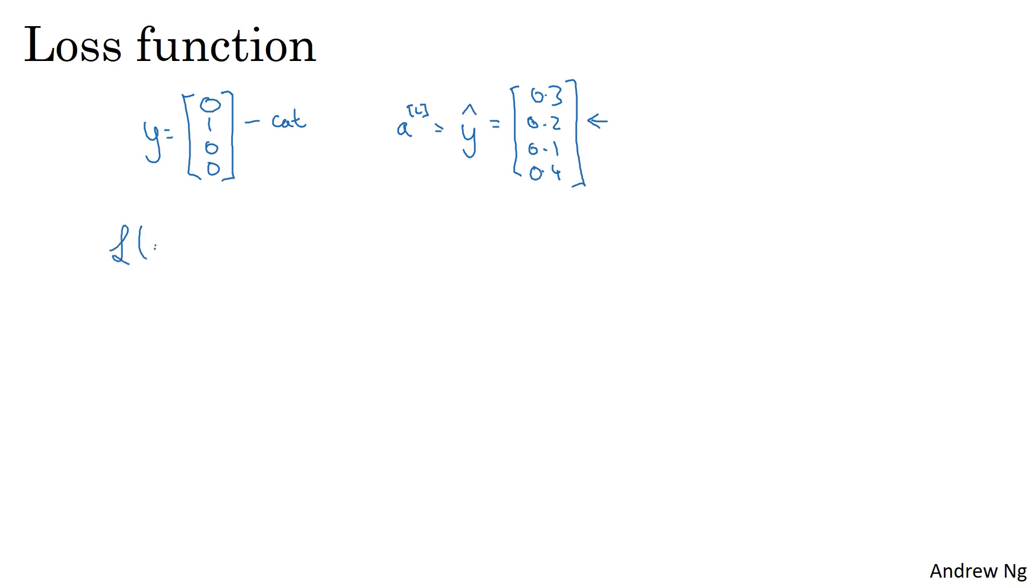So what's the loss function you would want to use to train this neural network? In softmax classification, the loss we typically use is negative sum of j equals 1 through 4, and it's really sum from 1 to C in the general case. I just use 4 here, of yj log y hat j. So let's look at our single example above to better understand what happens. Notice that in this example, y1 equals y3 equals y4 equals 0, because those are 0s and only y2 is equal to 1.